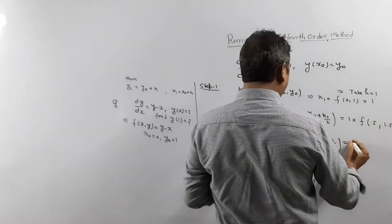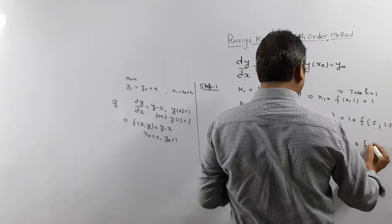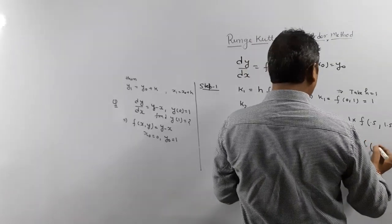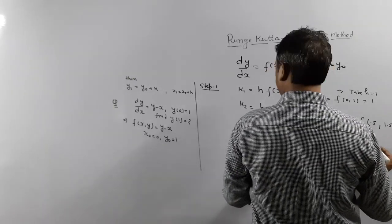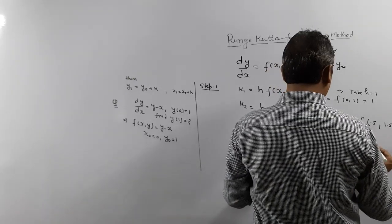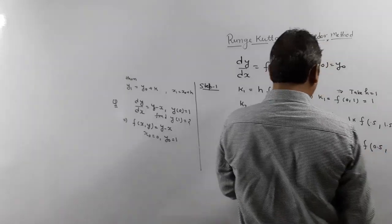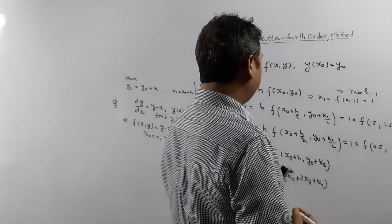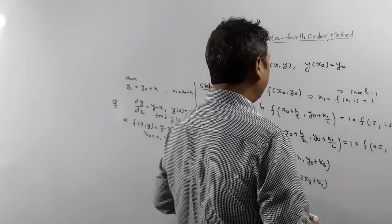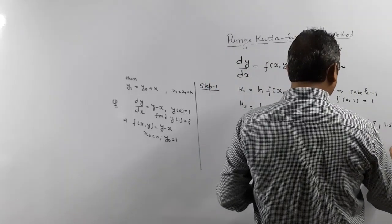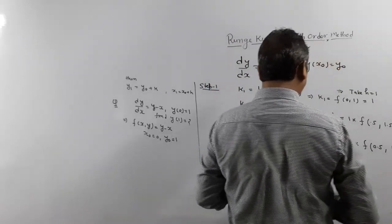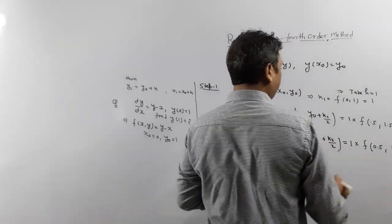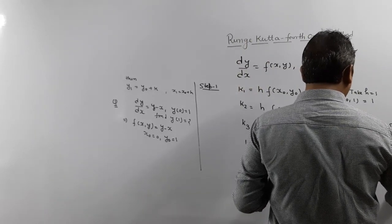What is k3? k3 is h, function at x0 plus h/2. What is h/2? means 0.5, y0 plus k2/2. What is k2? k2 is 1. So this is also 1.5. Because 1/2 means 0.5, y0 is 1. So again value is 1.